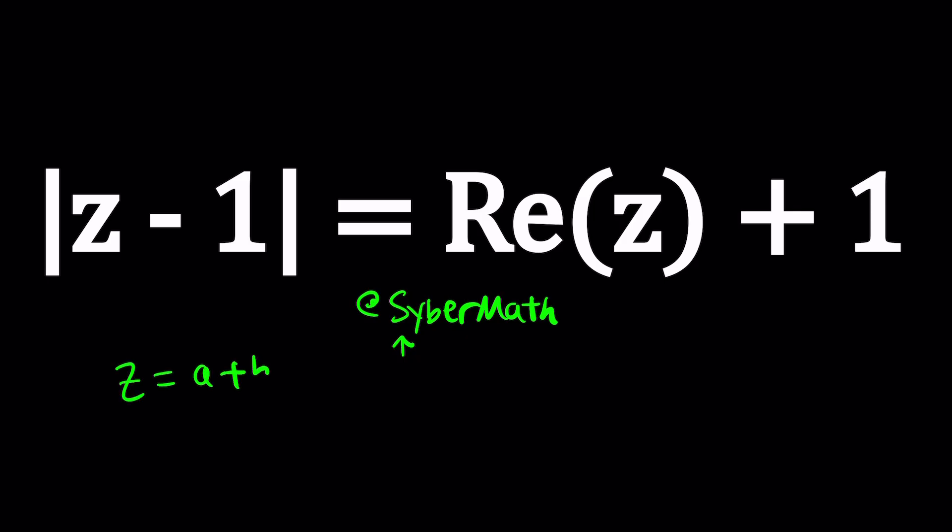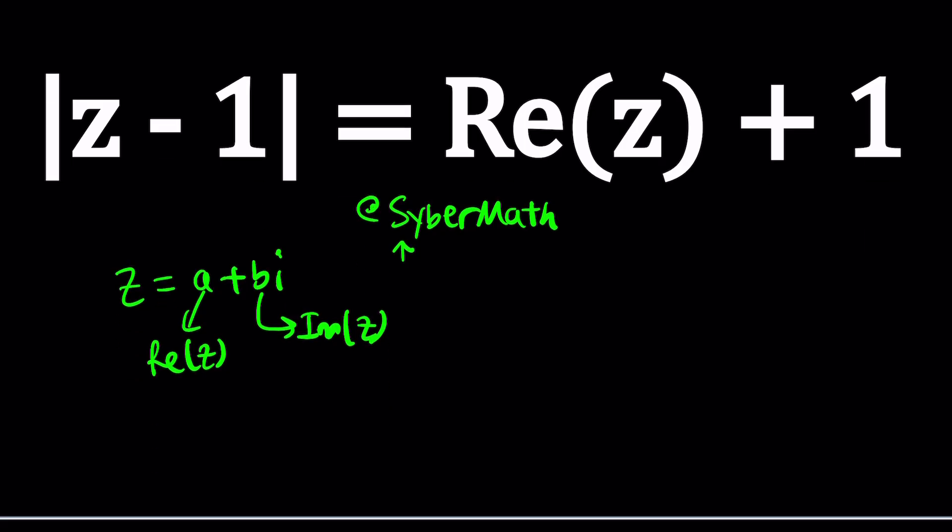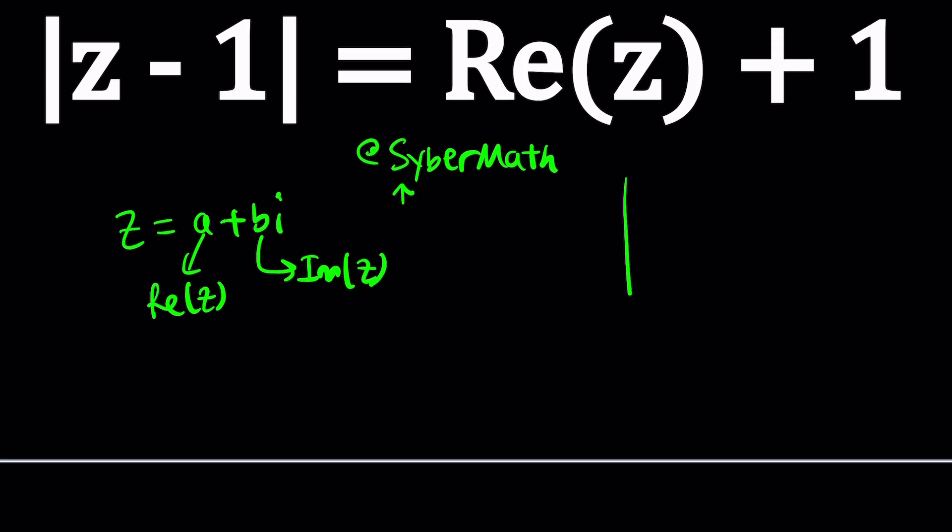If z is equal to a plus bi, then a is called the real part of z, and b is called the imaginary part of z. Sometimes people get confused. The imaginary part does not contain i, just b. Because both the real part and the imaginary part have to be real, which is weird. But that's what it is. And this allows you to actually make a graph. Like you can plot a complex number using these as coordinates, like a units this way, b units that way.